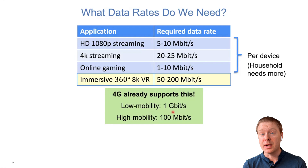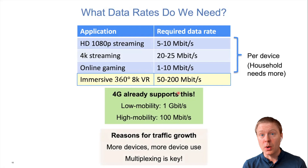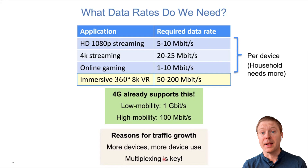4G is already able to deliver these rates — its goal from the beginning was one gigabit per second in low-mobility scenarios and 100 megabits per second in high-mobility scenarios. Immersive VR isn't even there yet as an application. The main issue is traffic growth, which is not because individual users need higher data rates, but because there are more devices around and we are using them more often — so multiplexing is really the key.